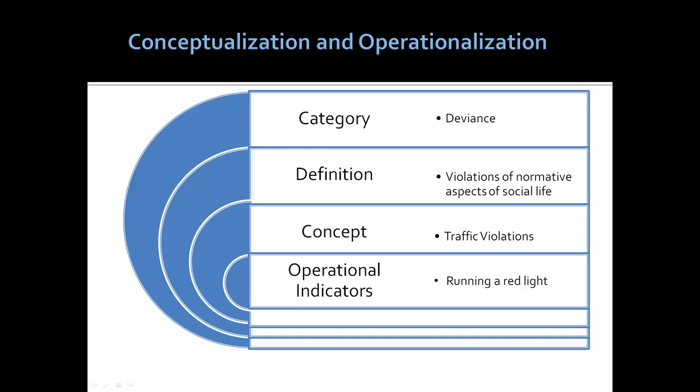A category would be deviant, its definition, the violation of normative aspects of social life. A concept, and remember that concepts initially are derived from behavioral observations, might be like traffic violations. And operational indicators, or variables, that which can be measured, might be running a red light.